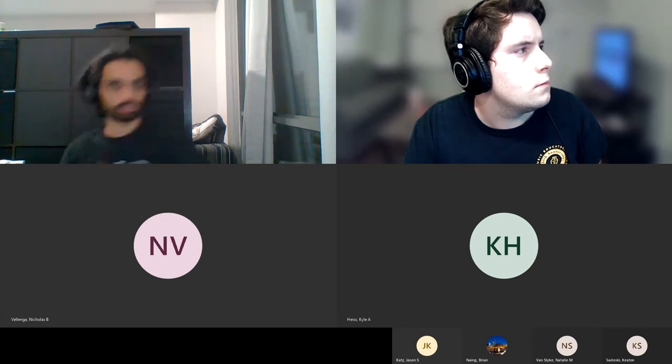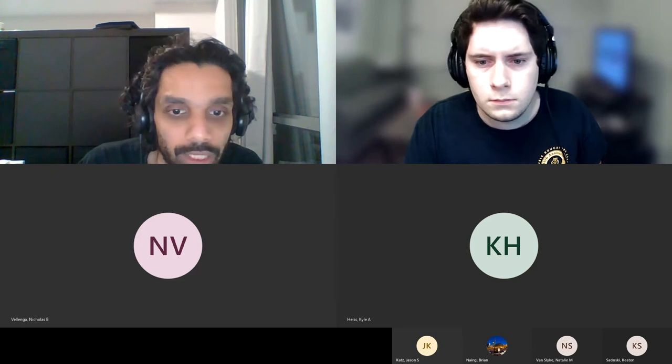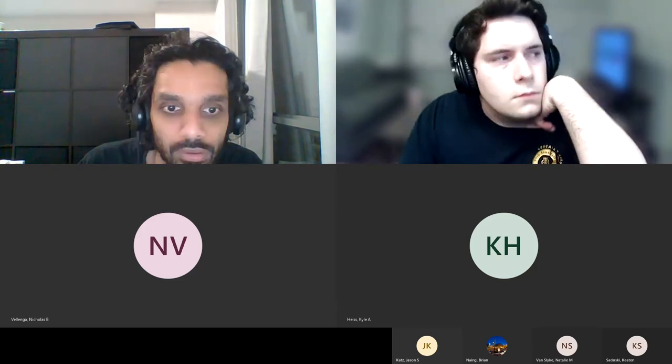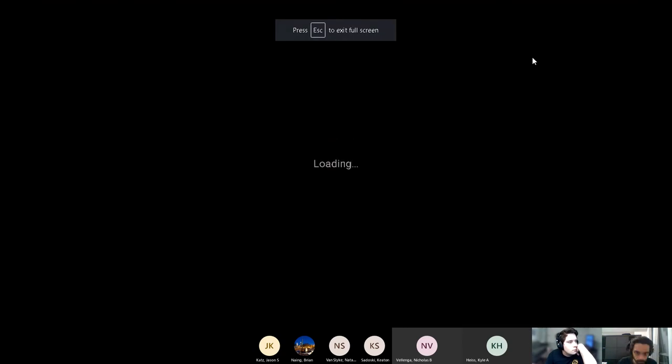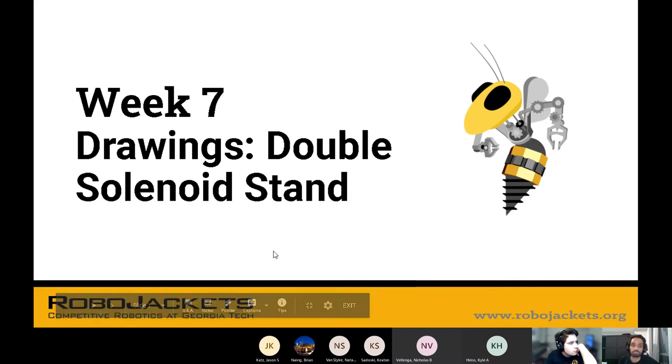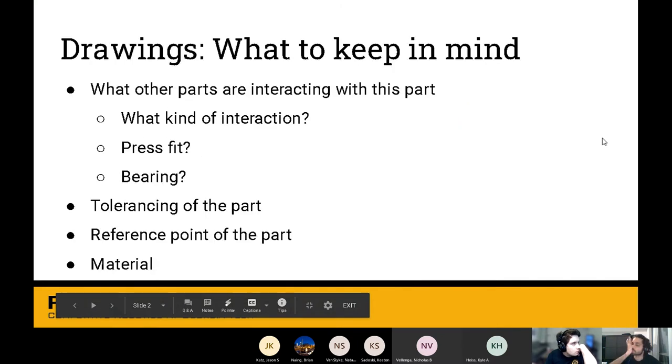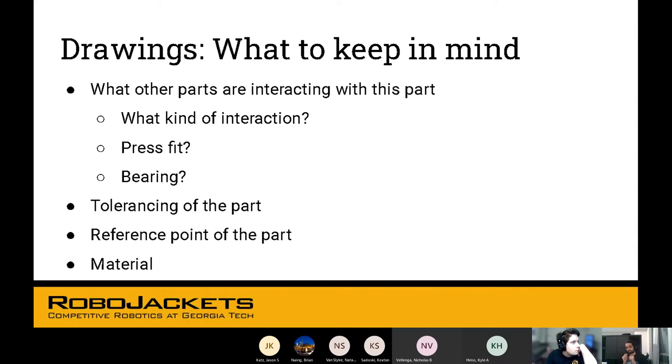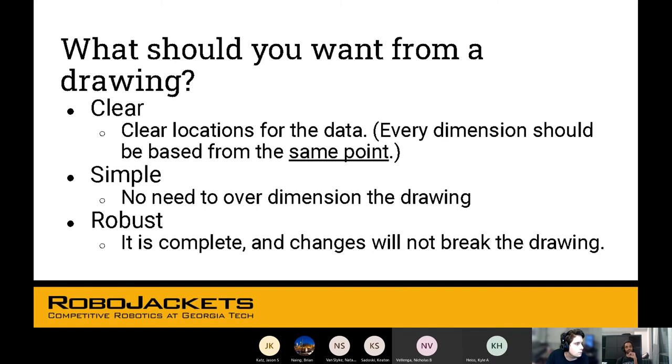Any questions? Let's move on to our CAD drawing guide. This week, we're going to learn how to do a drawing. This double solenoid stand is just a part that we have. So what is a drawing? Basically, when you design a part in a CAD software, you want to make that part using different things. If you're not using 3D printing, like if you're using a mill or something, then you'll have to communicate this information to a machinist somehow.